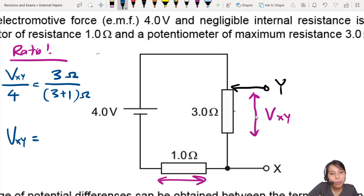And what you get for VXY will be 3 over 4 times 4, which equals 3 volts. That means the biggest you can get out of VXY as the output, if you connect a voltmeter there, is 3 volts.